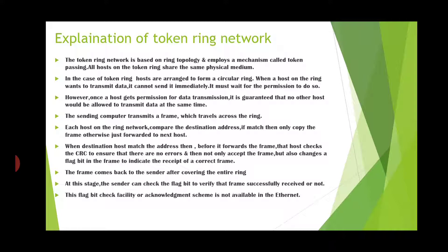When the destination host matches the address, before forwarding the frame, it checks the CRC to ensure there are no errors. It then accepts the frame and also changes a flag bit to indicate receipt of the correct frame. The frame comes back to the sender after covering the entire ring. At this stage the sender can check the flag bit to verify whether the frame was successfully received. This flag bit acknowledgement scheme is not available in Ethernet.